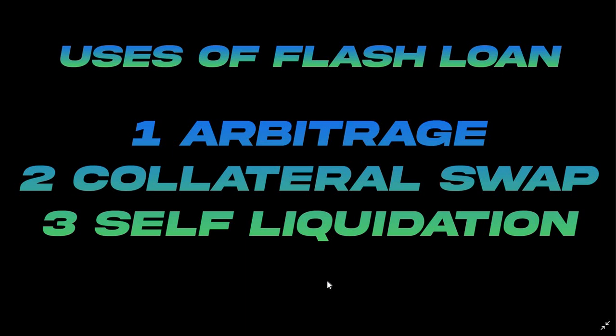The second use case is collateral swap. For example, suppose you took a loan using Ethereum on Compound Finance and you want to swap that Ethereum collateral for USDT. Normally you can't simply replace it, but in this scenario you can use a flash loan to replace your collateral.